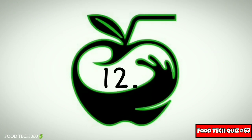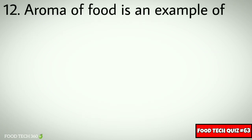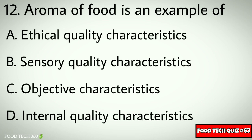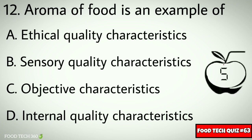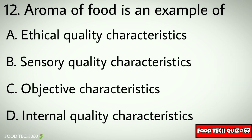Question No. 12. Aroma of food is an example of: Options: A. Ethical Quality Characteristics, B. Sensory Quality Characteristics, C. Objective Characteristics, D. Internal Quality Characteristics. Correct answer: B. Sensory Quality Characteristics.